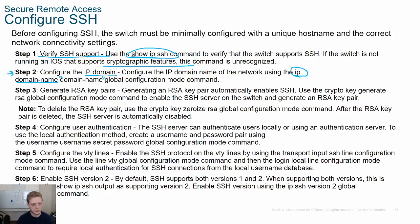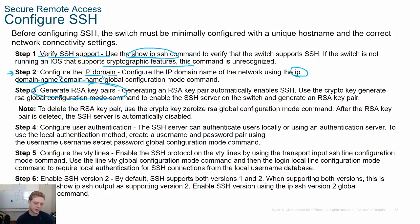Before generating RSA keys, you must configure the IP domain name. The RSA keys are what enable the actual encryption in SSH. If those keys are compromised, your encryption is useless. Generate RSA key pairs specific to your unique domain name — don't rely on any default keys that may come with the switch.